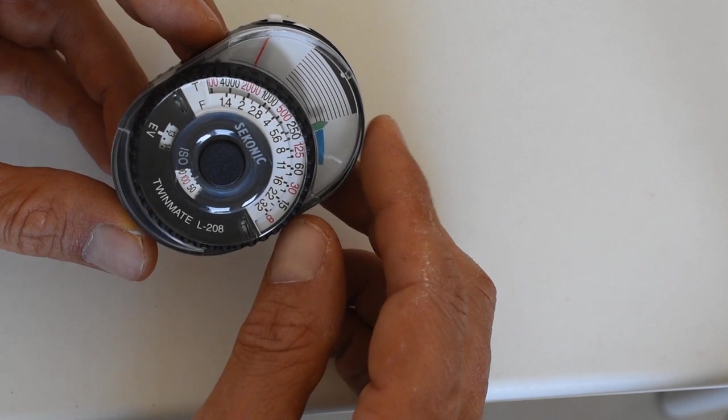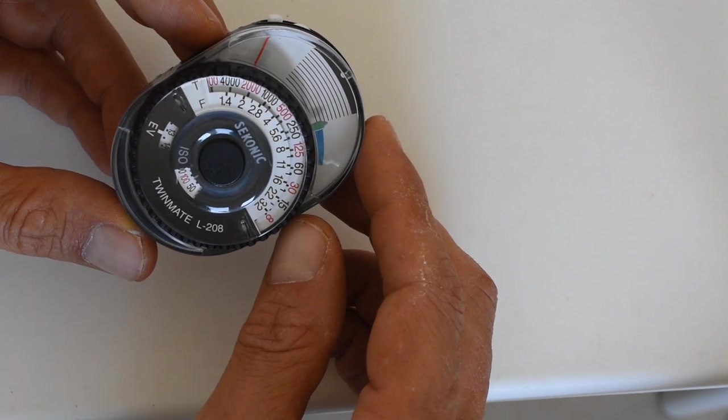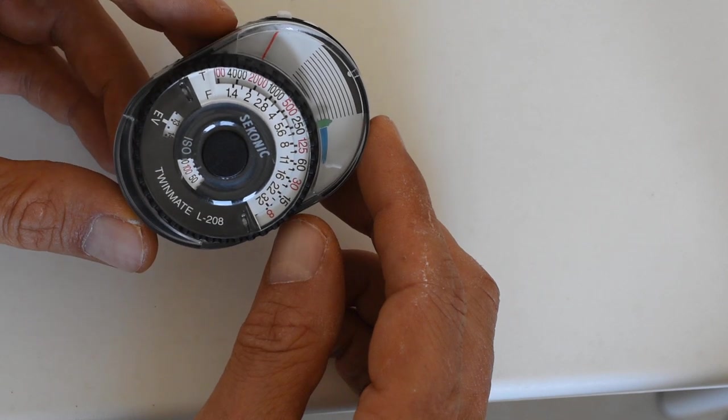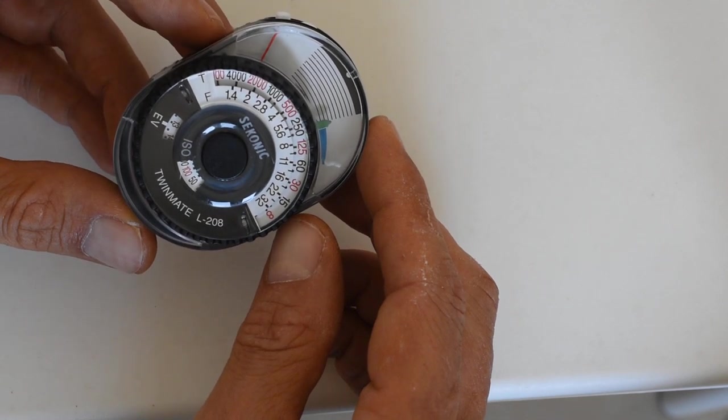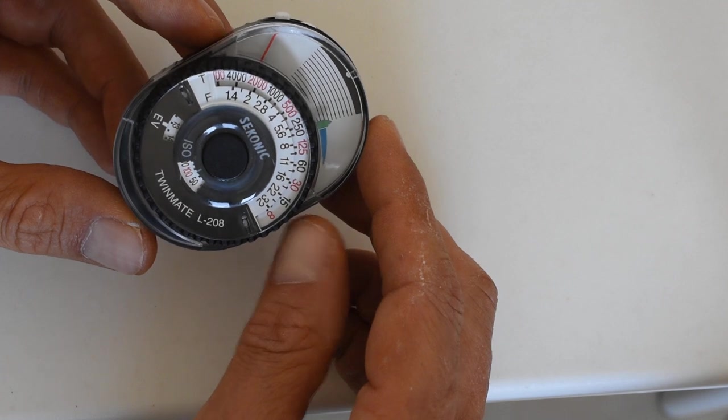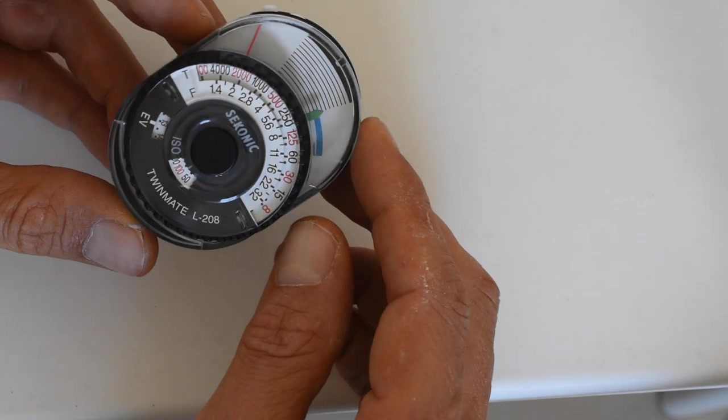There's the Voigtlander VC2, I think it's called. That thing sells for about $225 US in New York. And then there's another light meter which I had not heard of before, but in preparation for this video I took a look at what was listed at one of the major New York retailers.